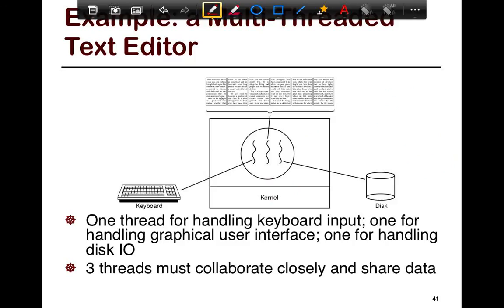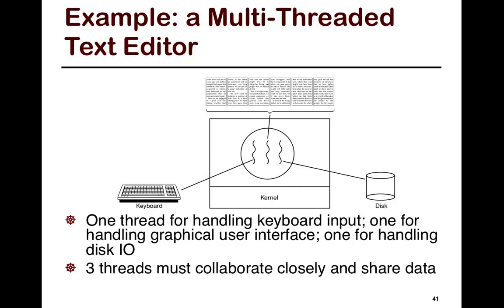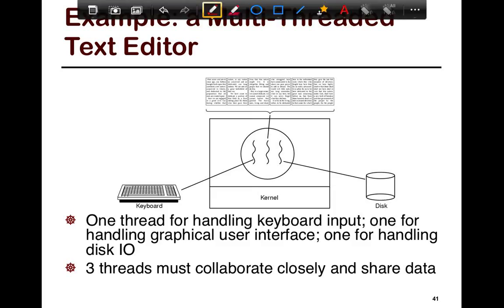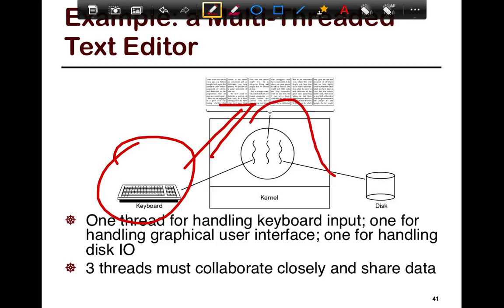A concrete example where threads are quite useful is a multithreaded text editor. You have one thread for handling all the keyboard input, another thread for handling all the GUI stuff, and then one for handling all the IO. The three threads closely collaborate and share data. All your keystrokes need to appear on the screen, which means your GUI thread needs to be aware of them. And when you hit save, those things need to be flushed to disk. There's a lot of sharing between them, which is why there are threads as opposed to processes.